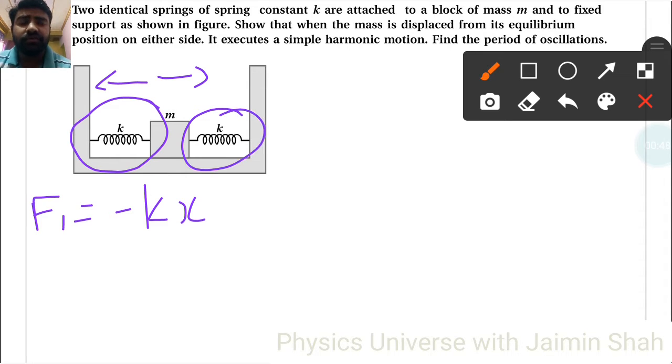Similar to this, here also if our object is right-hand side then spring constant will be left-hand side, spring exerting force will be left-hand side. So again F2 is equal to minus kx.